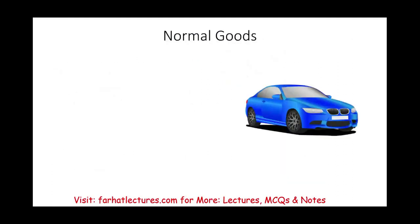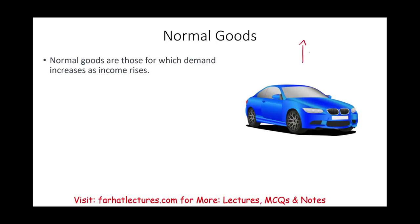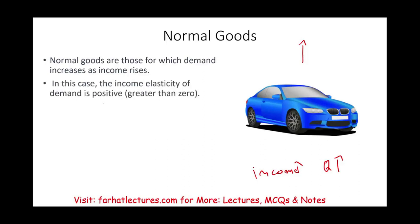Starting with normal goods — what do we mean by normal goods? Normal goods are goods for which demand increases as income increases. Anything you would like to buy more of as your income goes up — if the quantity demanded for that product goes up, we call it normal goods. For example, if you have more money, you might want to buy a better, more luxurious car. In this case, the income elasticity of demand is positive, greater than zero.